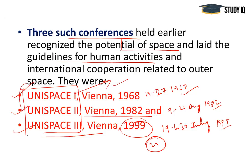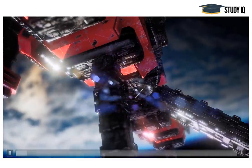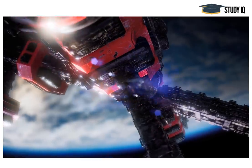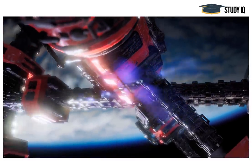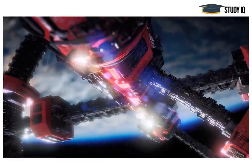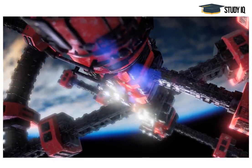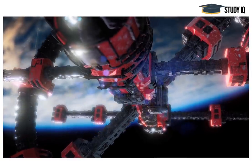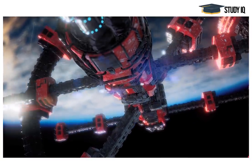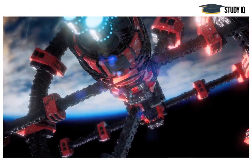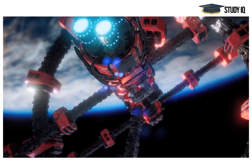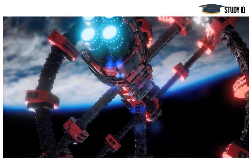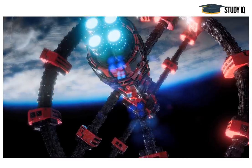ISRO is also building its own nano satellites, known as INS — the ISRO Nano Satellite system. It is a versatile and modular nano satellite bus system envisioned for future science and experimental payloads. There are four main objectives of INS: first, to design and develop a low-cost modular nano satellite; and second, to provide an opportunity for ISRO technology demonstration and payloads.